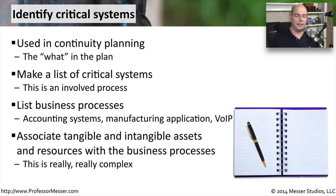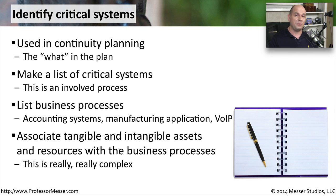This is an extremely complex process, and usually you might even bring in third parties to help you make these determinations. For example, your accounting system may touch particular servers, there's certain data associated with those, there are third parties you might go to for accounting and payroll, there might be a printing process and a printer — and just those individual systems have to be considered if you need to have some type of plan should anything happen to the accounting systems.